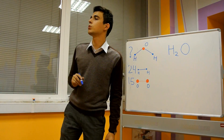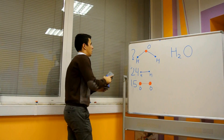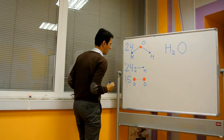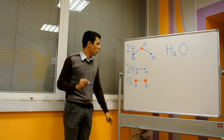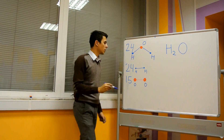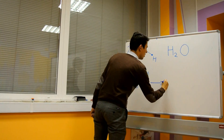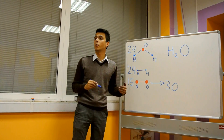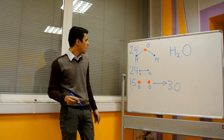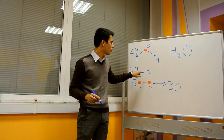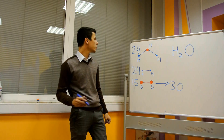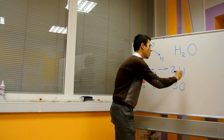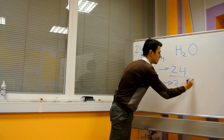Thank you very much. The assistant will check your answers. And the correct answer is 24. 15 molecules of oxygen gas give us 30 oxygen atoms, which can produce 30 molecules of water. But 24 molecules of hydrogen gas can be converted only to 24 molecules of water. Therefore, hydrogen is a limiting factor.